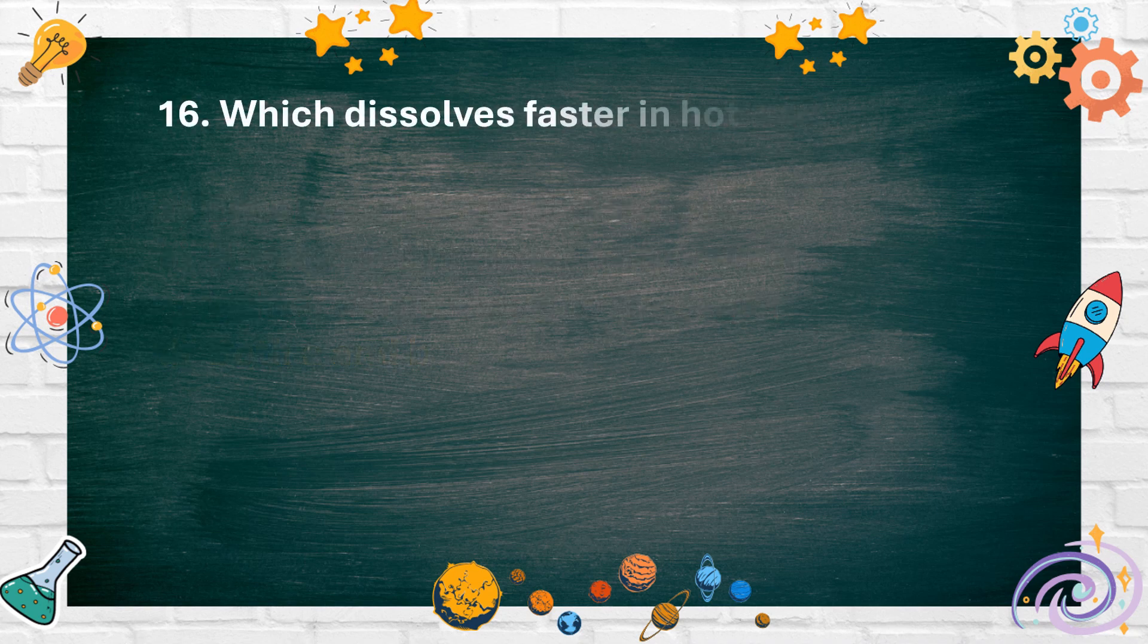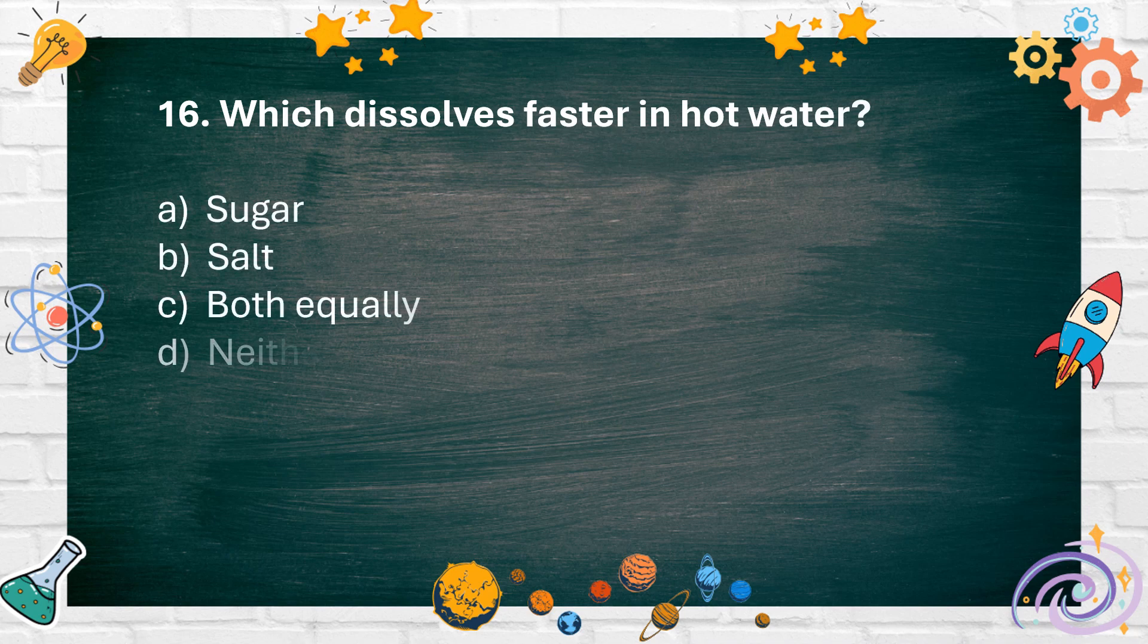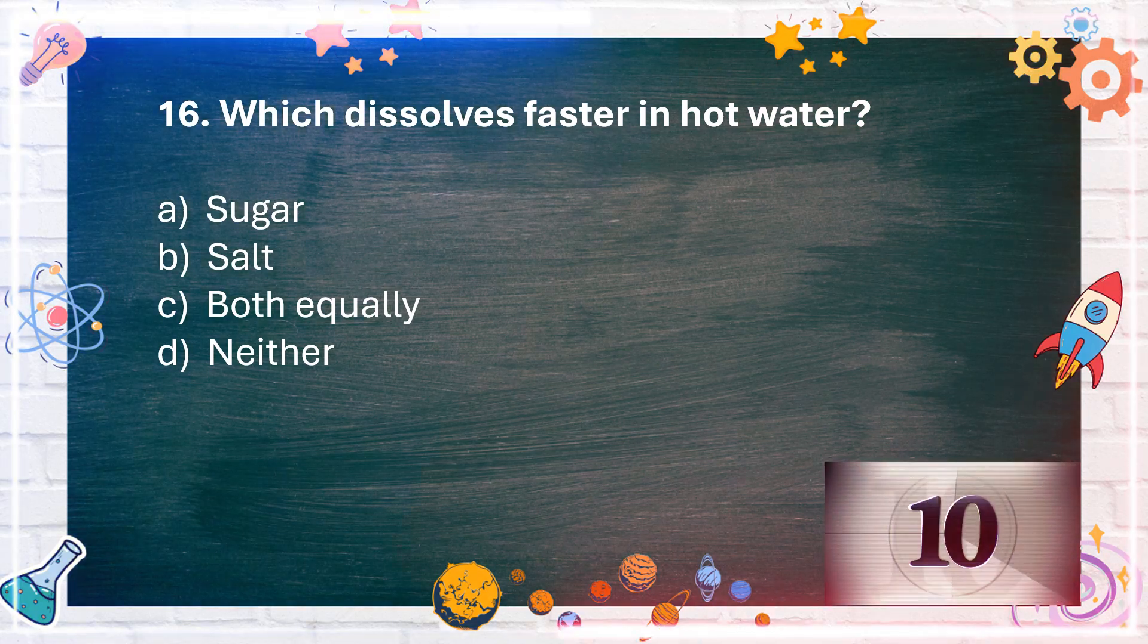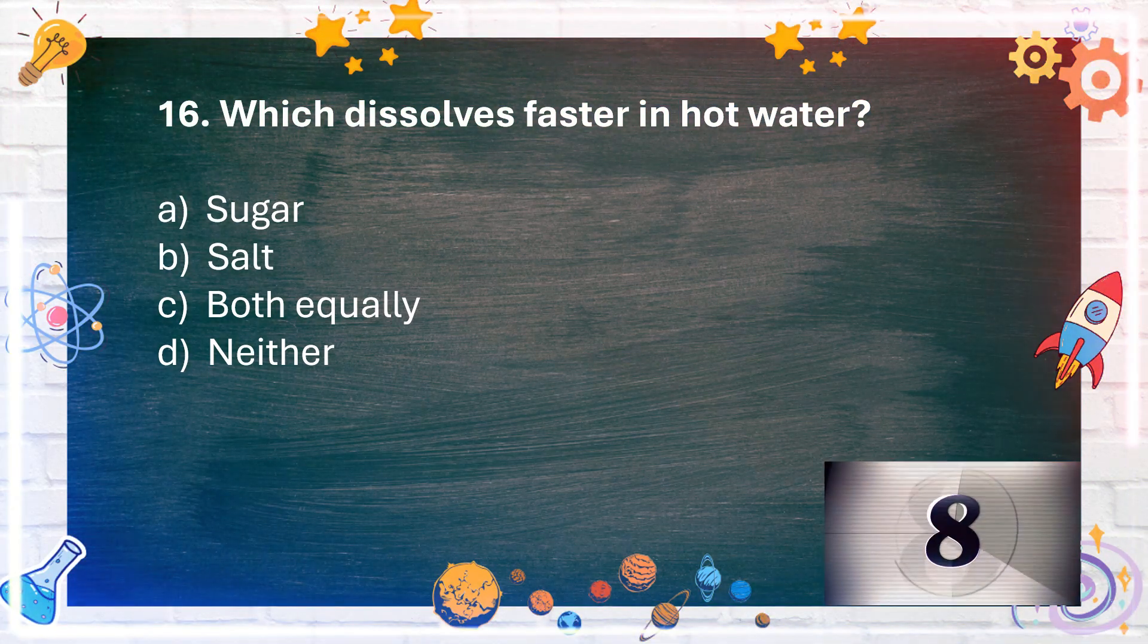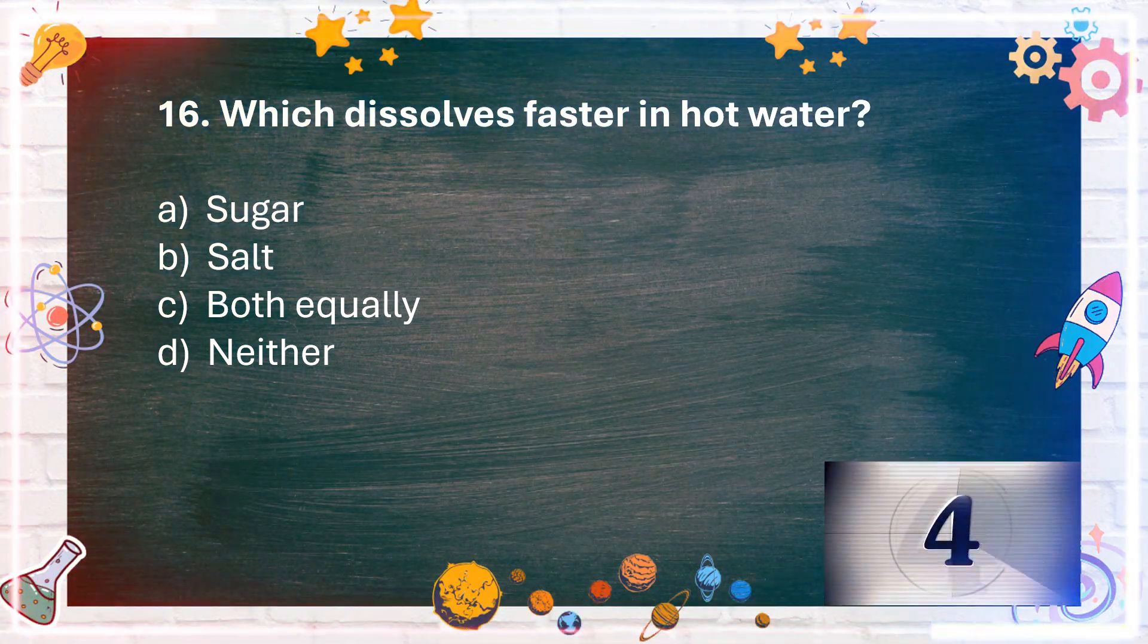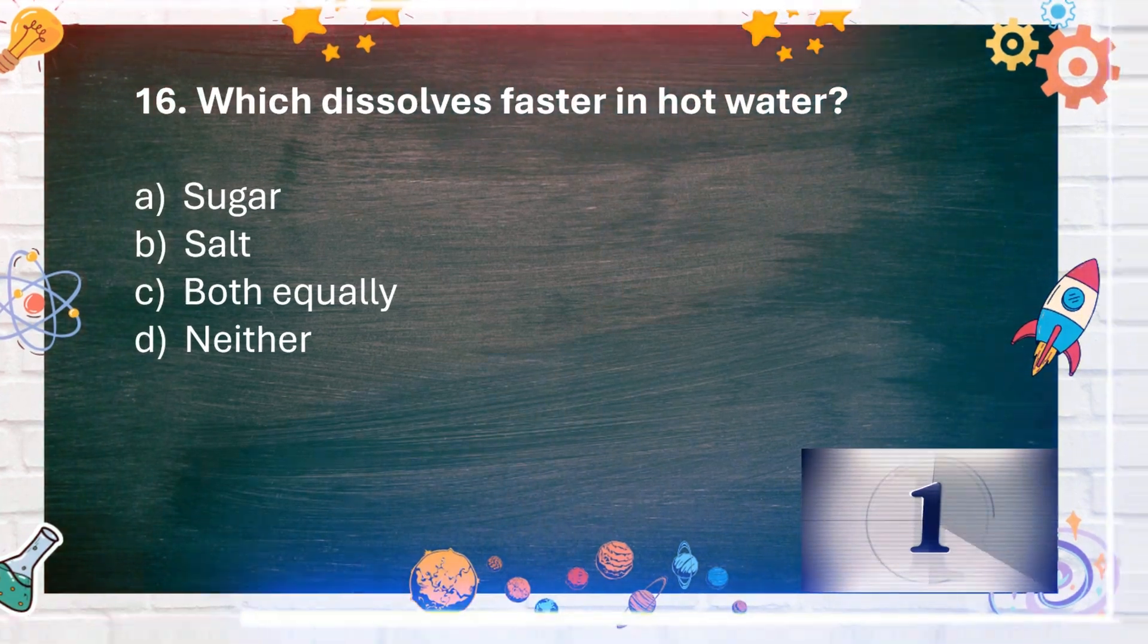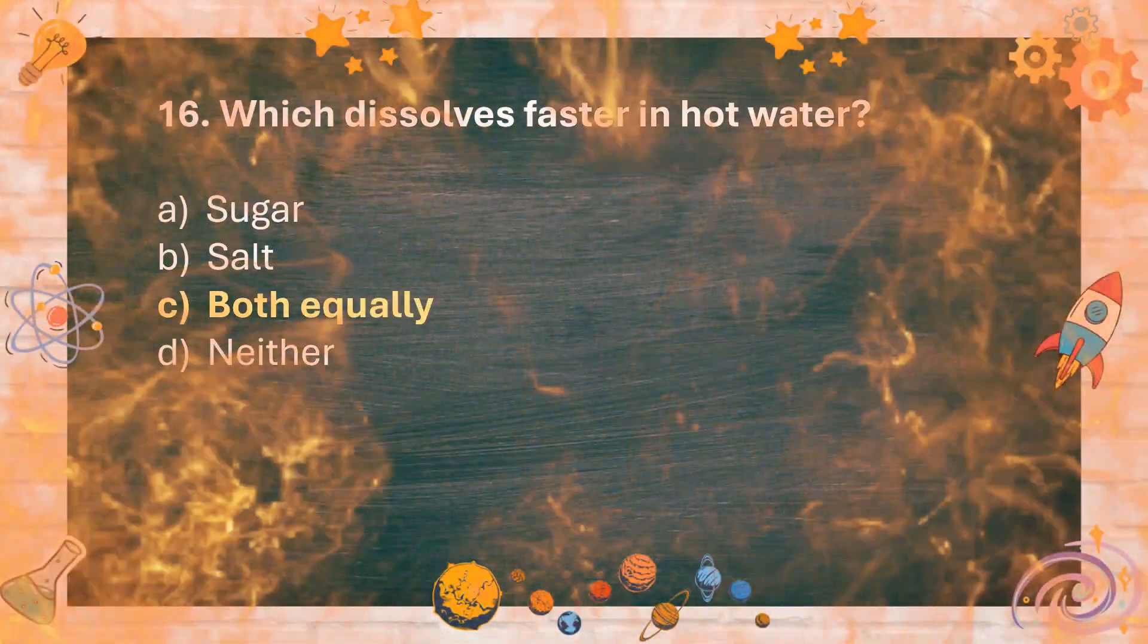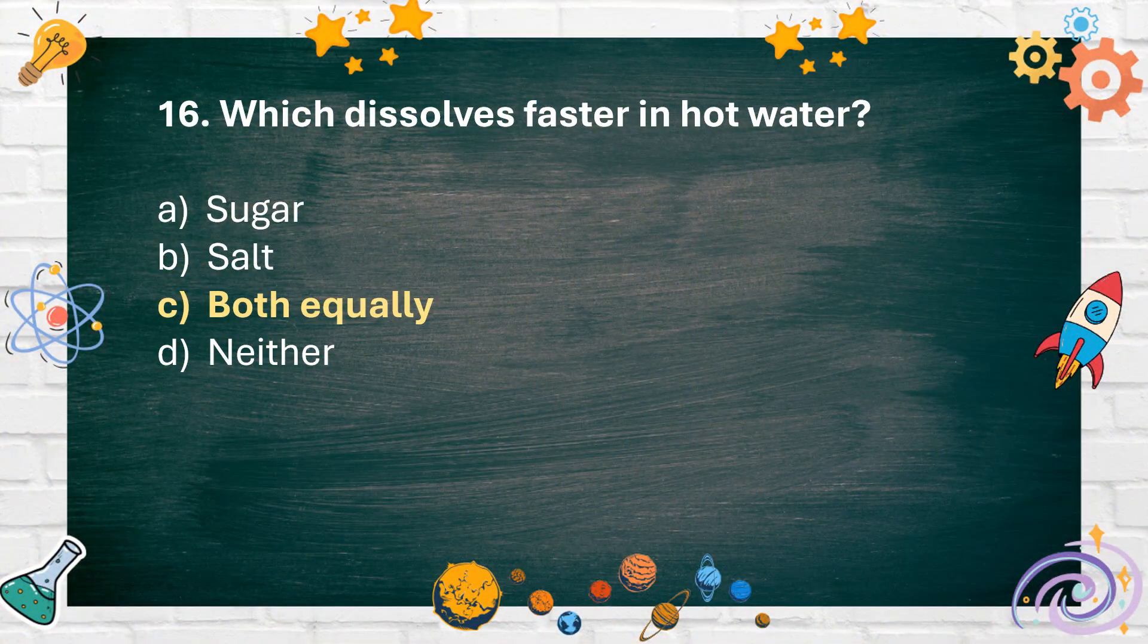Number 16: Which dissolves faster in hot water? A. Sugar. B. Salt. C. Both equally. D. Neither. The answer is C. Both equally.